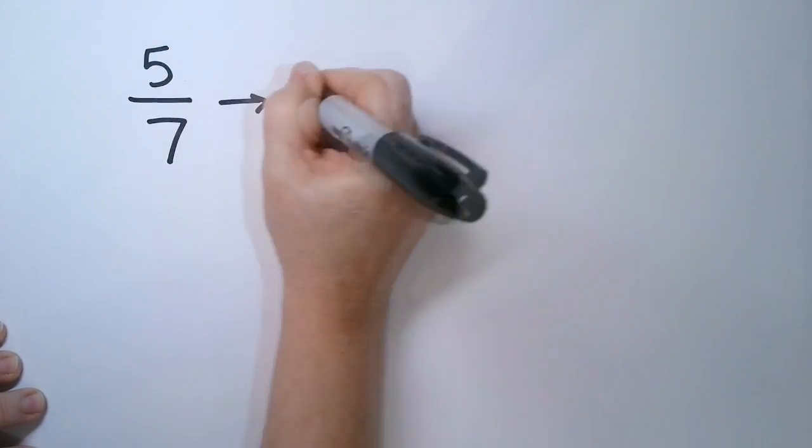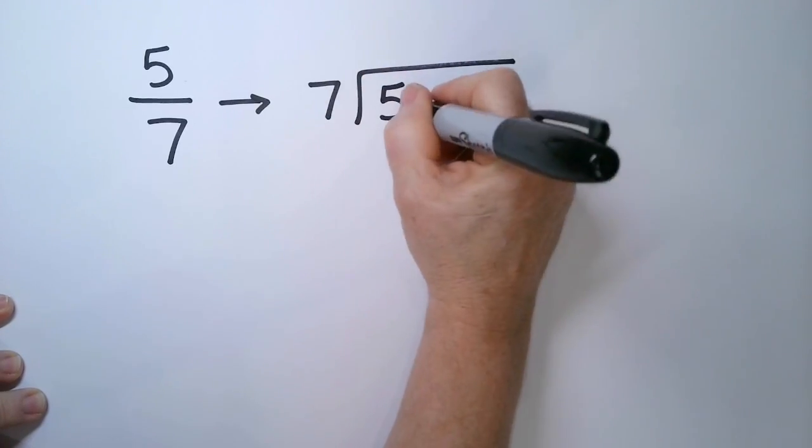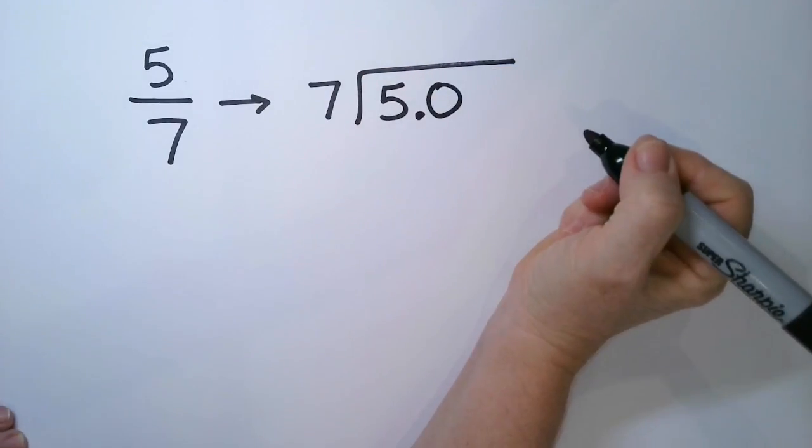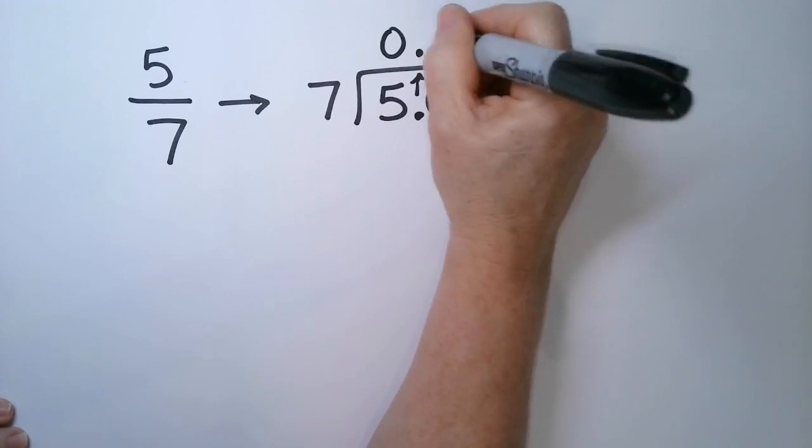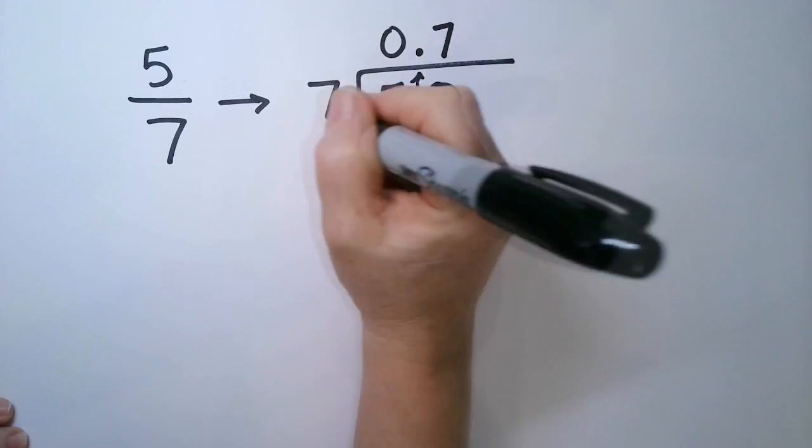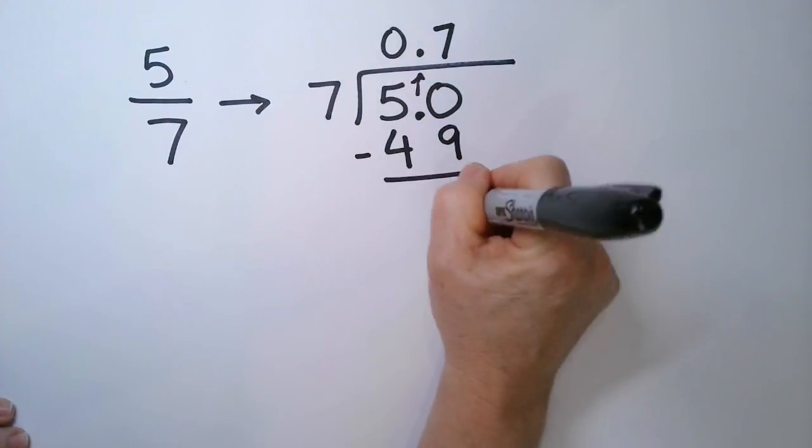5 sevenths. So the 7 goes here, the 5 goes here. 7 doesn't go into 5, so we already have to add a 0. So we're going to have a decimal point. Let me just push it up early. So this is going to be a 7. 7 times 7 is 49, and I have a difference of 1.